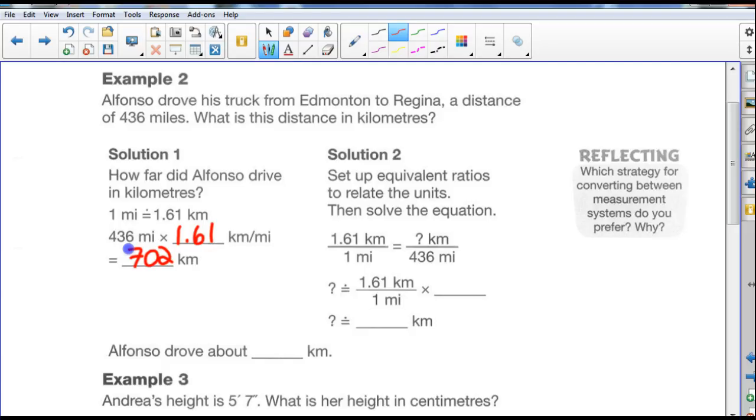Solution number two, set up equivalent ratios to relate the units, then solve the equation. So we can say there's 1.61 kilometers per 1 mile, which is equal to how many kilometers in 436. So whenever we have equivalent ratios, we can cross-multiply.